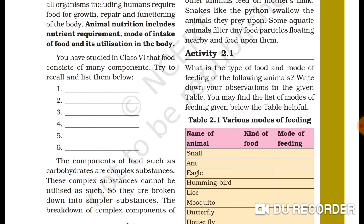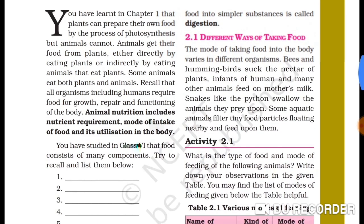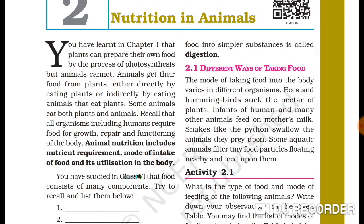The components of food such as carbohydrates are complex substances. These complex substances cannot be utilized directly, so they are broken down into simpler substances. Carbohydrates found in whole grain, potatoes, and fruits cannot be directly utilized by our body. Through digestion, complex substances are broken down into simple substances which our body can use. This process is called digestion.